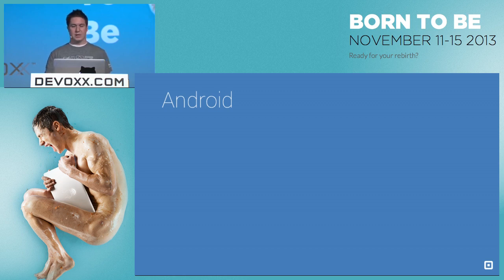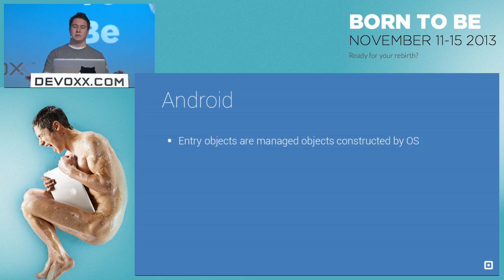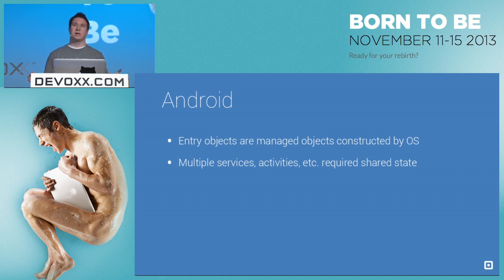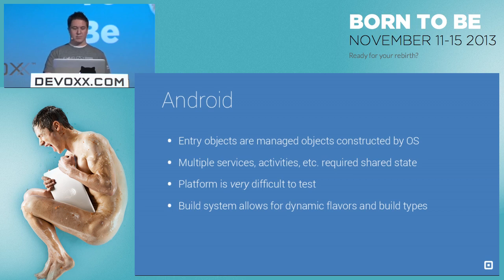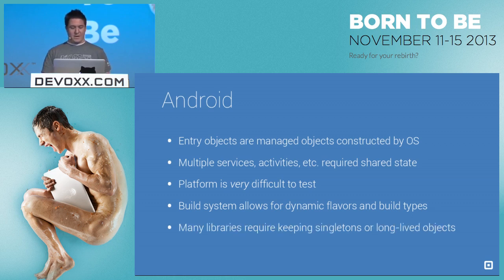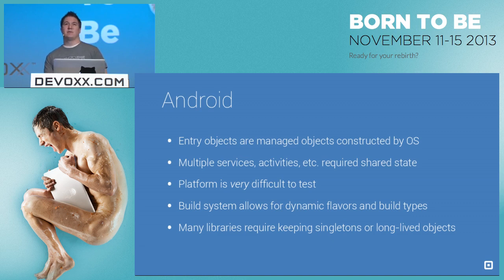Let's bring Android more into the mix. Android's entry objects are managed and constructed by the OS — things like activities, services, fragments — all constructed by Android and they usually require some kind of shared state like the logged-in user. The platform is traditionally extremely difficult to test. Dependency injection, both as a pattern and using a library, is a very big aid to simplify how you can test your app. Additionally, the new Gradle-based build system is extremely dynamic and allows for multiple flavors and build types, which lends itself to dependency injection. There are also many libraries that require you to follow patterns like the singleton pattern just to keep track of state and long-lived objects.